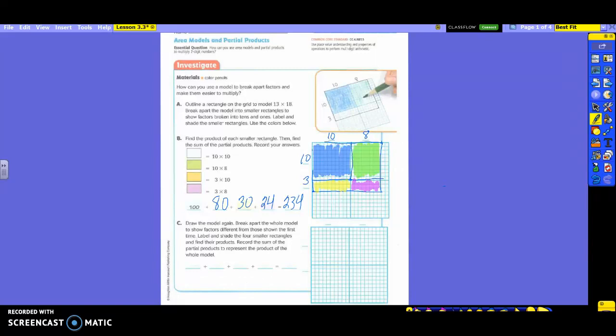All right, let's look at C. It says to draw the model again, but to break apart the whole model to show factors different from those shown the first time. We're going to do the same thing. Label and shade the four smaller rectangles and find their products. We're going to record the sum of the partial products to represent the product of the whole model. So basically, we're doing the same problem, but we're going to split it up differently. Does that make sense? So we need to start with what step?